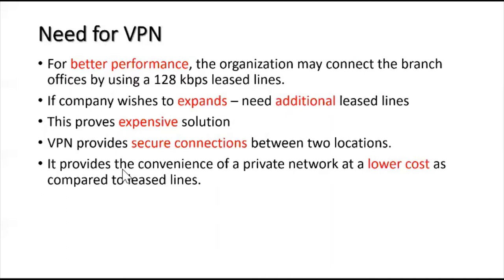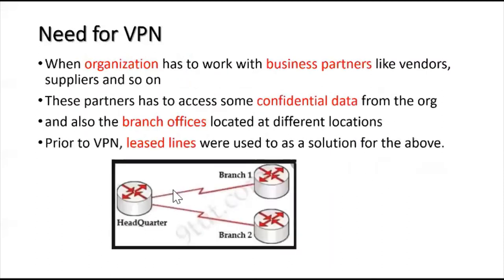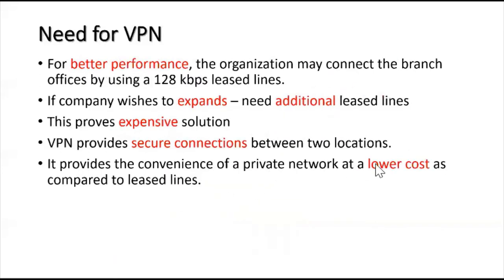Because of that, a newer solution was introduced, which is VPN. VPN produces a secure connection between two locations. It provides the convenience of a private network at a lower cost compared to lease lines. In lease lines, it was a private network, but VPN also provides a similar private network experience, but at lower cost compared to the lease line. That is why the need for VPN arose — it is found to be much cheaper.